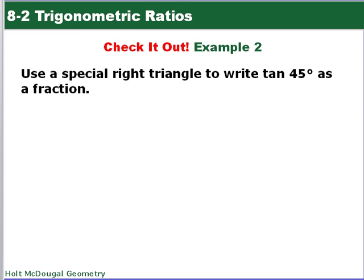And now it's your turn. Use a special right triangle to write tangent of 45 degrees as a fraction. And again, draw out the picture. And just so remember, 45 degree, or 45, 45, 90—a, a, a square root of 2.